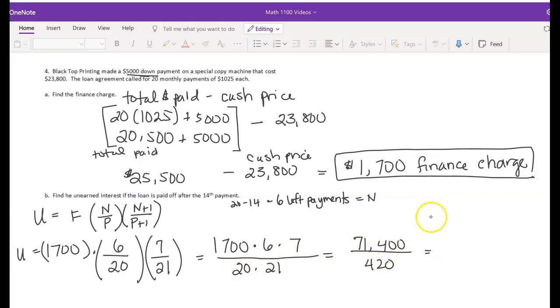So my numerator comes out to a total of 71,400, and my denominator 20 times 21 comes out to 420. And then dividing is a total of $170 in unearned interest. One more part to go.